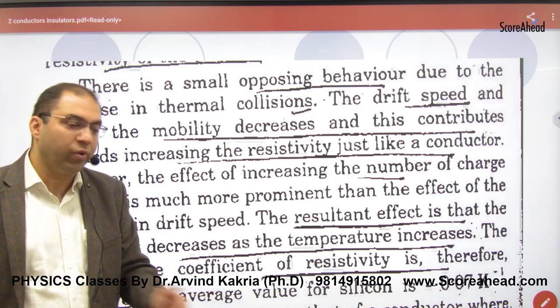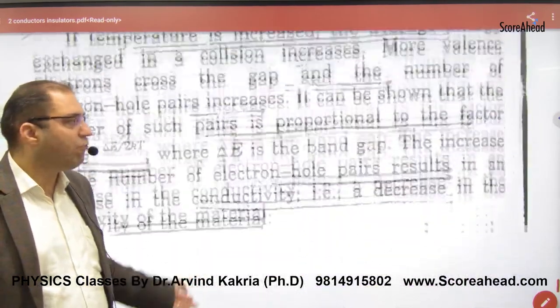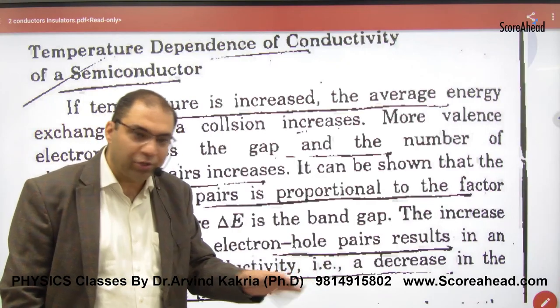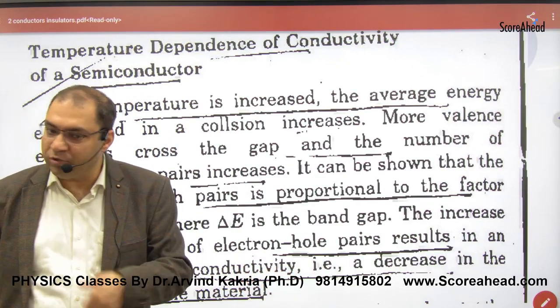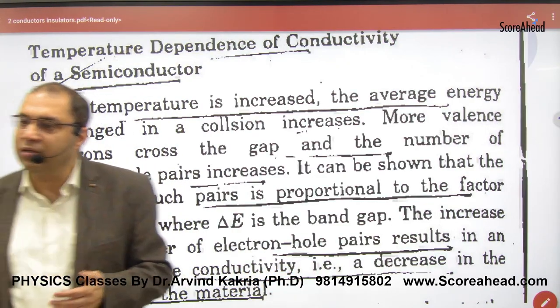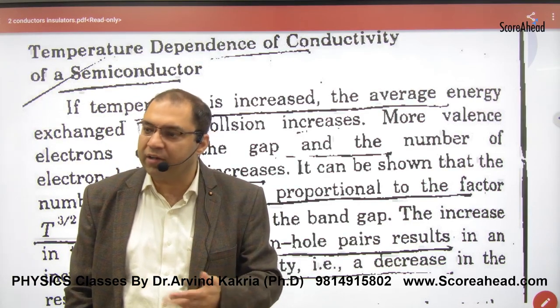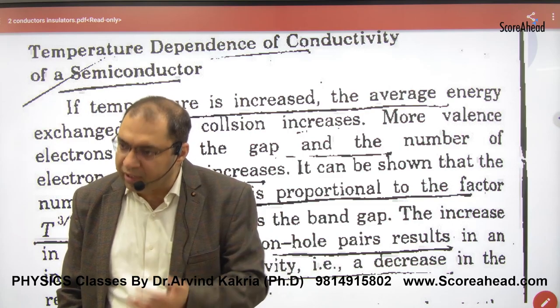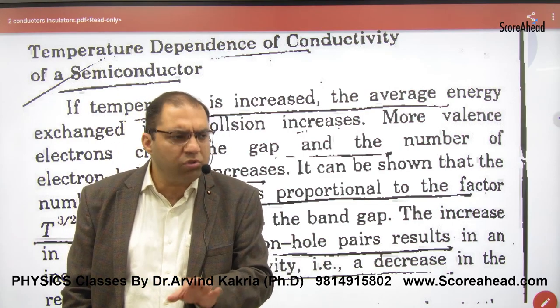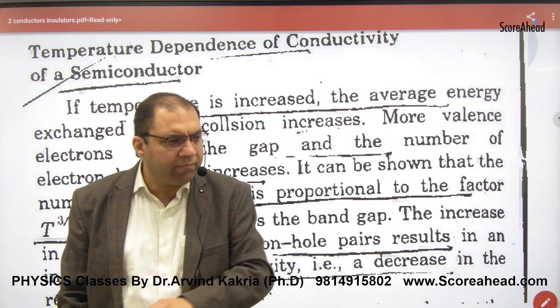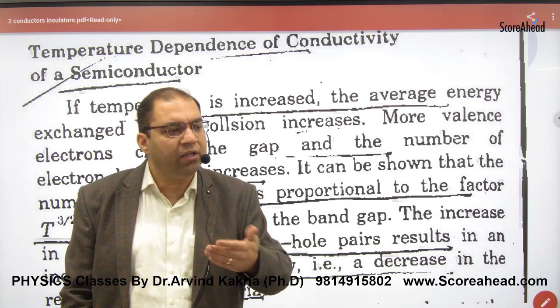So one way we say that the number of holes and electrons has more conductivity because they are free, and one way it is difficult to move. But the number of electrons and holes being free—these factors dominate more, and that's why overall conductivity of semiconductor increases.